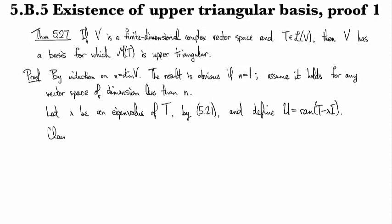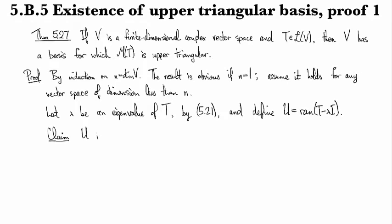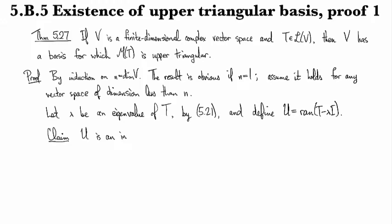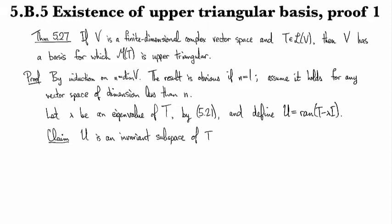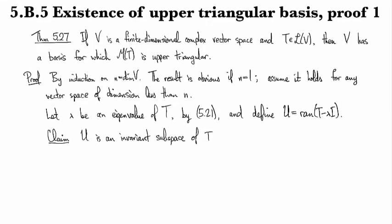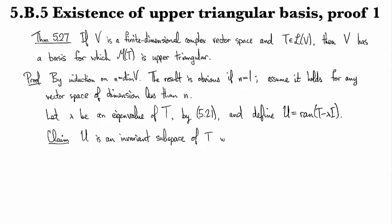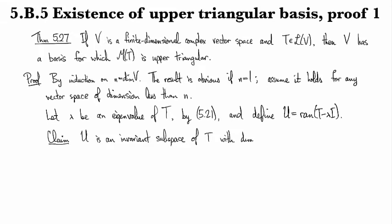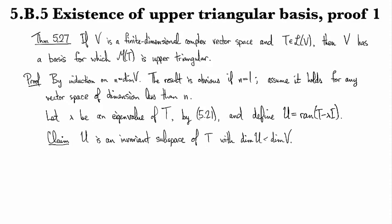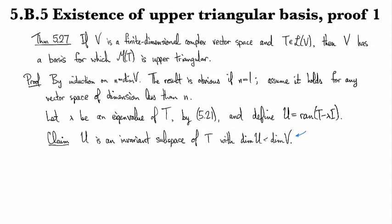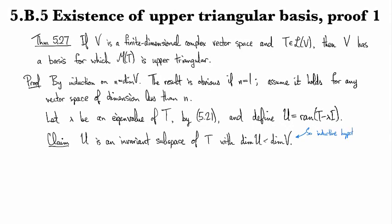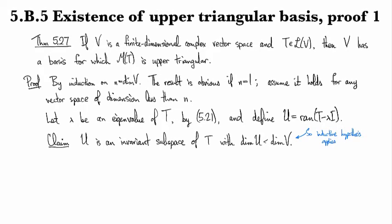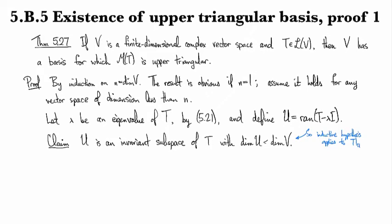So then we have the following claim: U is an invariant subspace of T, and we know from what we've seen before that it would be an invariant subspace of T minus lambda I, but it's actually an invariant subspace of T as well. And also that we have the dimension of this guy is strictly less than the dimension of V. And so the upshot of this claim is that then the inductive hypothesis applies to T restricted to U, acting as an operator on U.